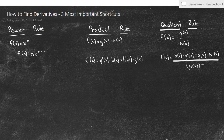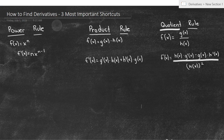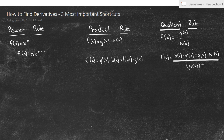Hey guys, so today we're going to talk about how to find derivatives, and we're going to go over the three most important shortcuts. These will help you find the vast majority of derivatives you're going to see. Learning how to solve derivatives is one of the most important things, and you'll be doing it for the rest of your math career. The three most important rules we're going to go over are the power rule, the product rule, and the quotient rule. Each one has its own application and difficulty, so we're going to go through one by one and show examples.